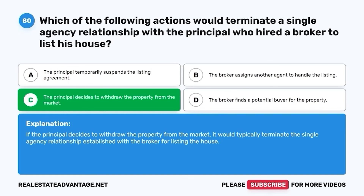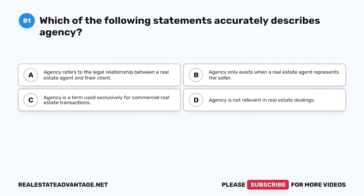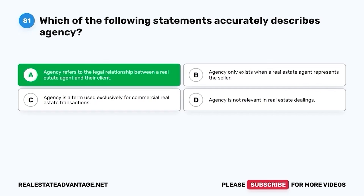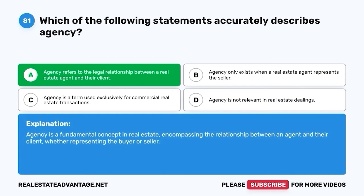Question 81. Which of the following statements accurately describes agency? A. Agency refers to the legal relationship between a real estate agent and their client. B. Agency only exists when a real estate agent represents the seller. C. Agency is a term used exclusively for commercial real estate transactions. D. Agency is not relevant in real estate dealings. The correct answer is A. Agency refers to the legal relationship between a real estate agent and their client. Agency is a fundamental concept in real estate, encompassing the relationship between an agent and their client, whether representing the buyer or seller.